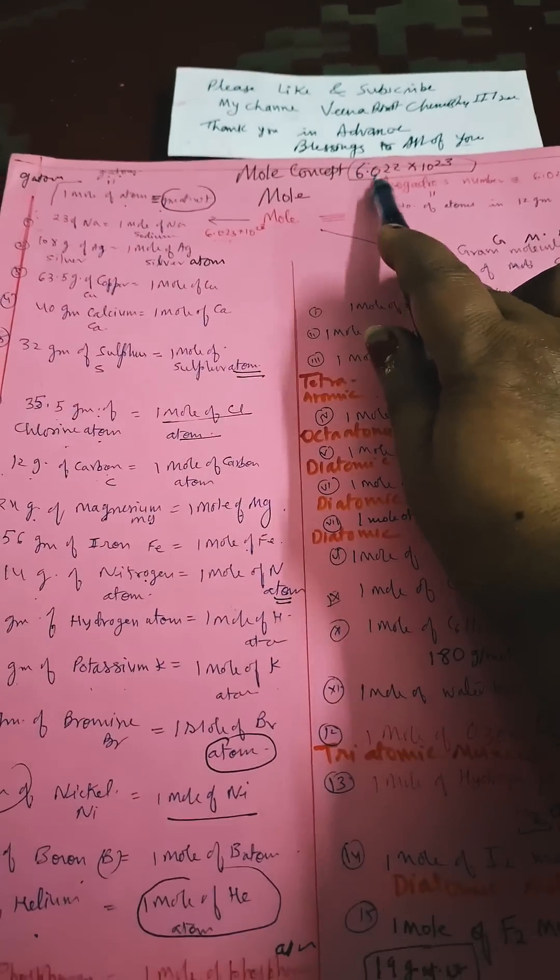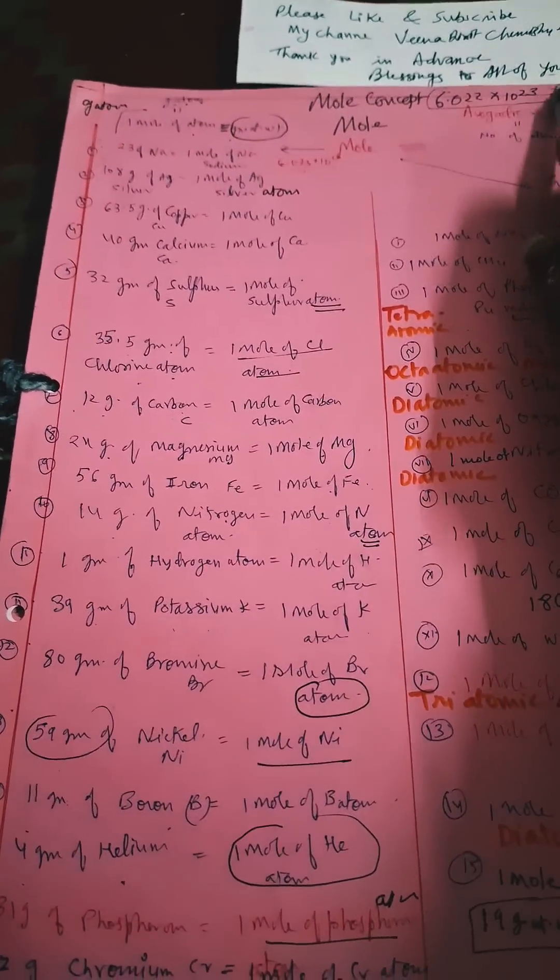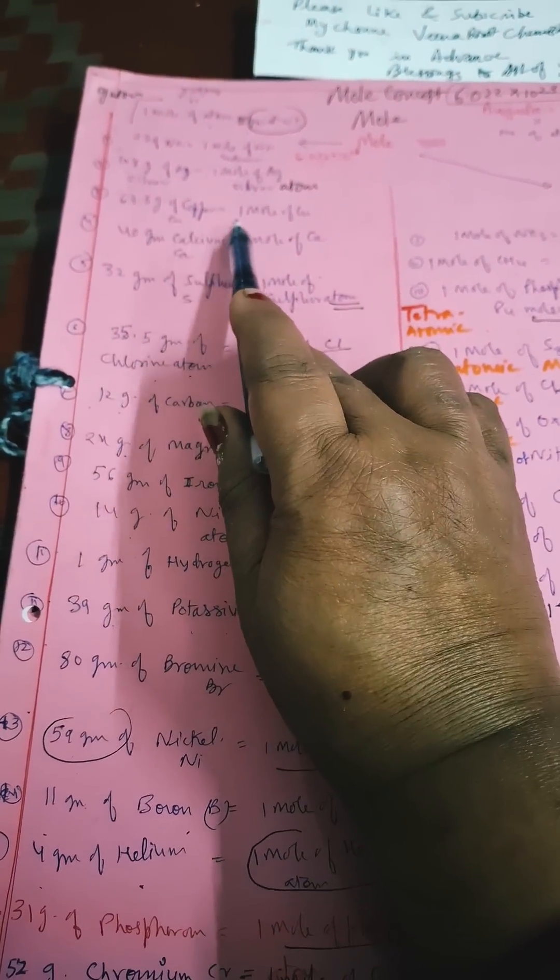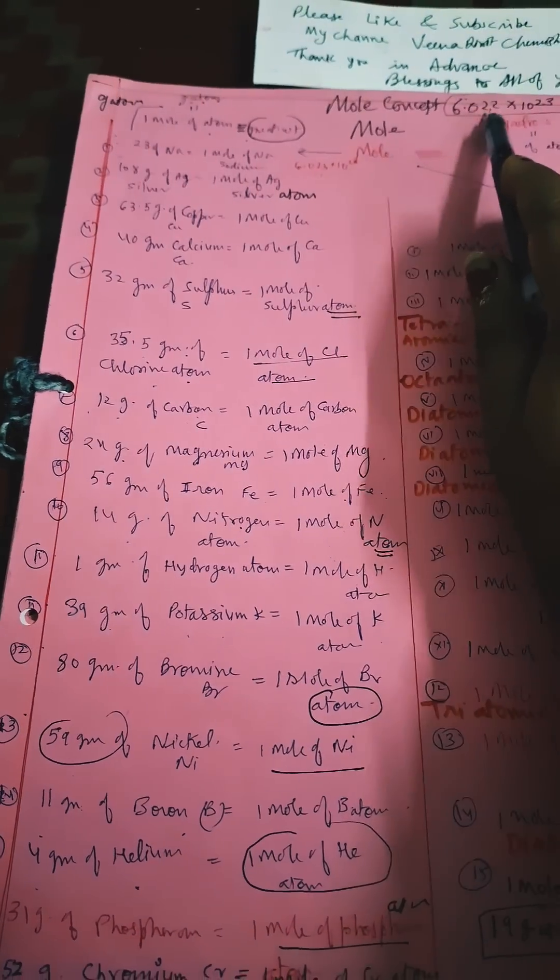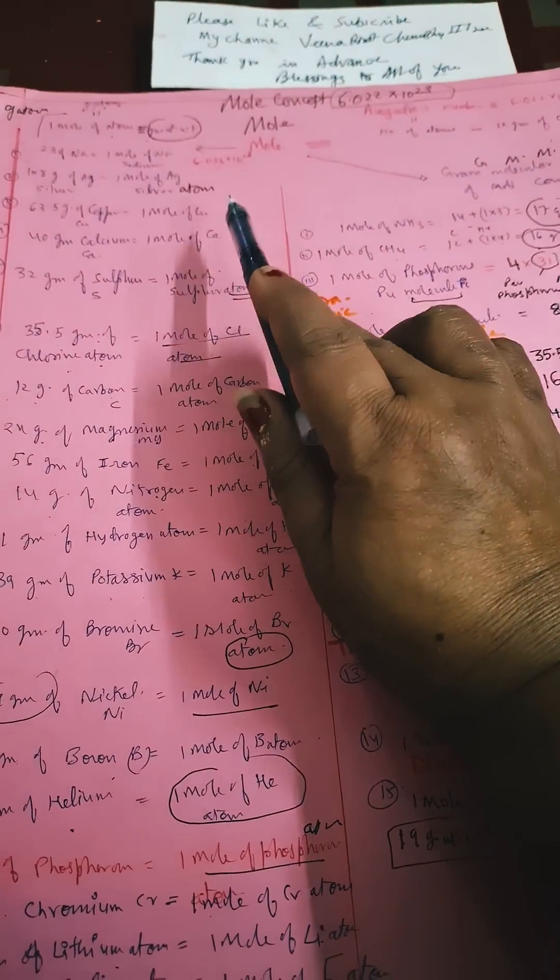This will have 6.022 × 10²³. If we are discussing atoms, this much atoms means 63.5 grams of copper - that is one mole of copper contains 6.022 × 10²³ atoms of copper.